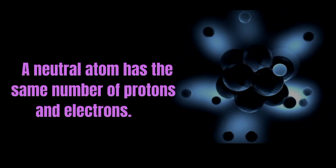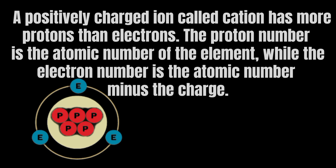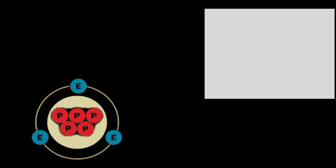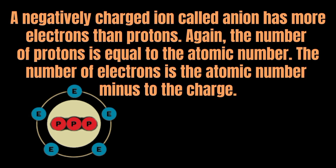A neutral atom has the same number of protons and electrons. A positively charged ion, called a cation, has more protons than electrons. The proton number equals the atomic number, and the electron number equals the atomic number minus the charge. A negatively charged ion, called an anion, has more electrons than protons. The number of protons equals the atomic number, and the number of electrons equals the atomic number minus the charge.